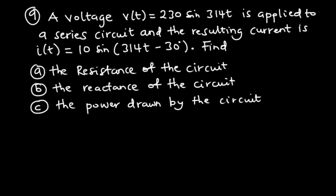For question number 9, we have a voltage V of T equals 230 sine 314T applied to a series circuit, and the resulting current is I of T which is 10 sine 314T minus 30 degrees. We have to find A, the resistance of the circuit, B, the reactance of the circuit, and C, the power drawn by the circuit.